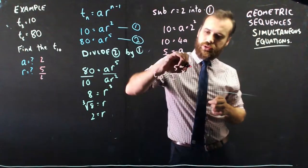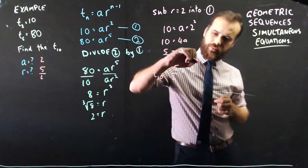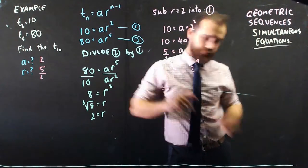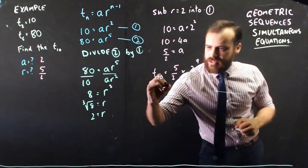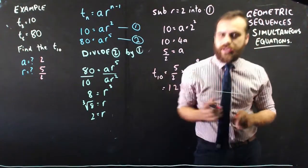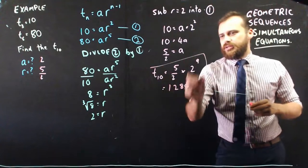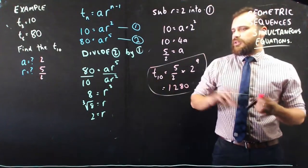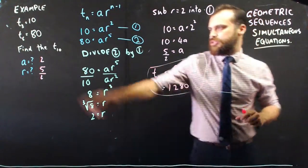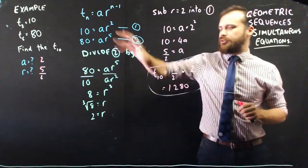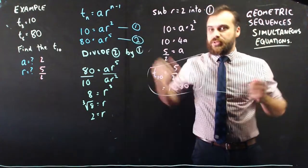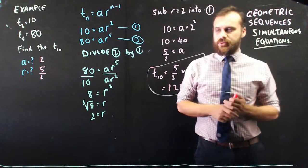And that gives us 1280. This bit's the really easy bit, obviously. The hard bit is using simultaneous equations to find the a value and the r value. And then you can use them however you want to use them afterwards.